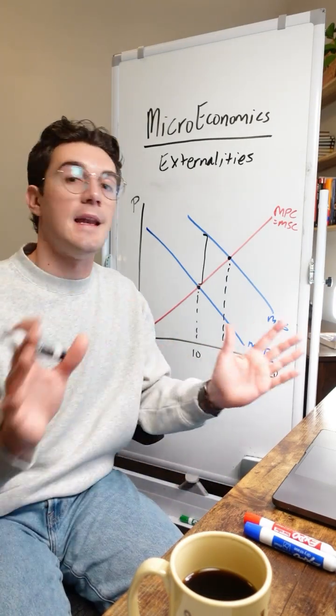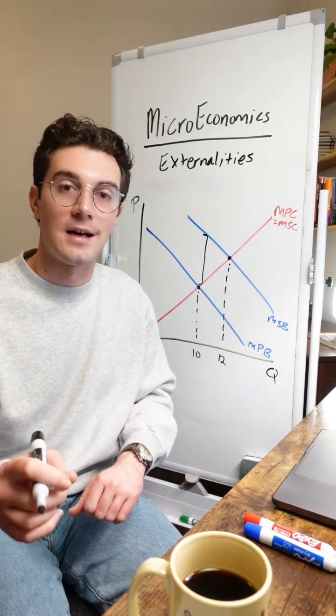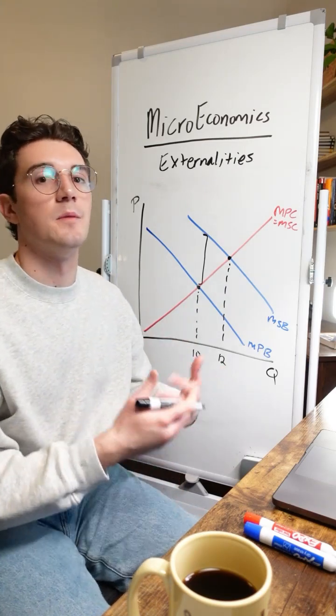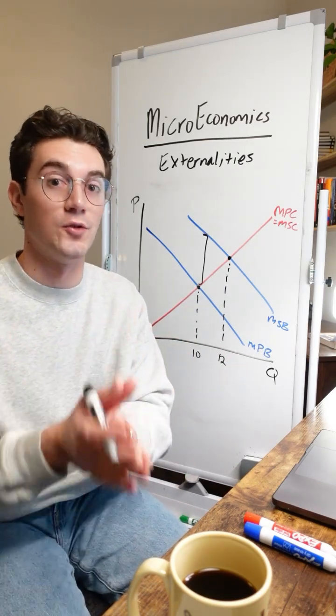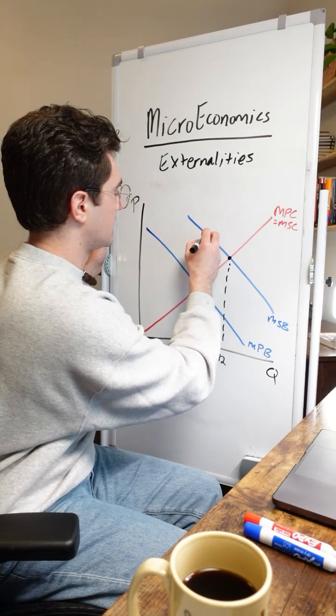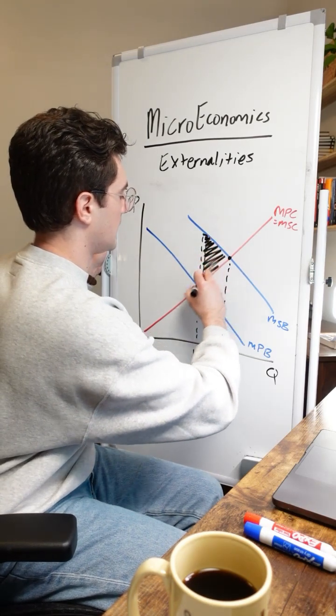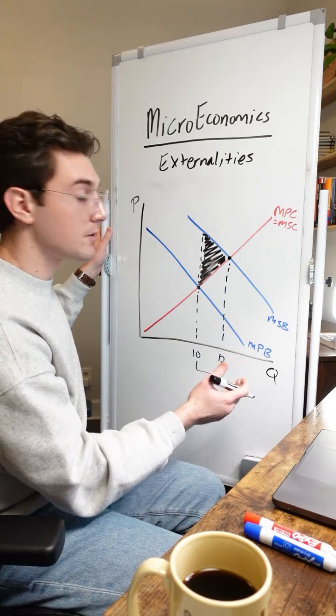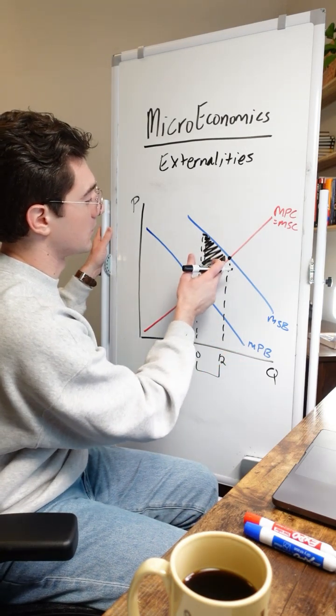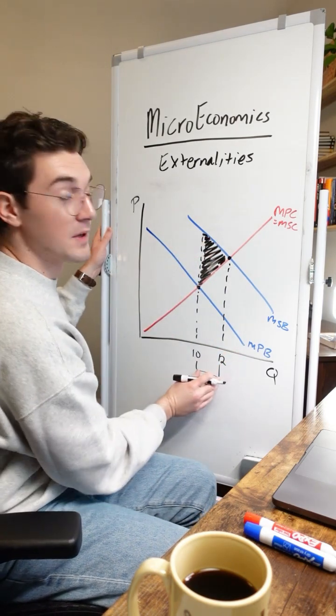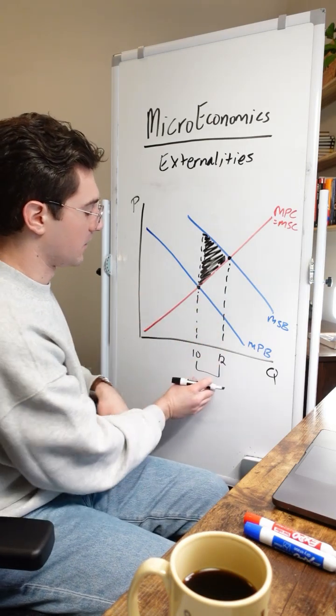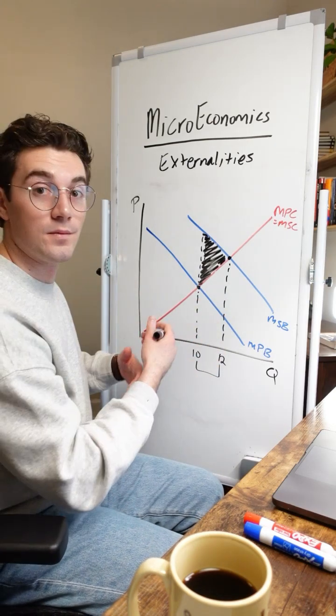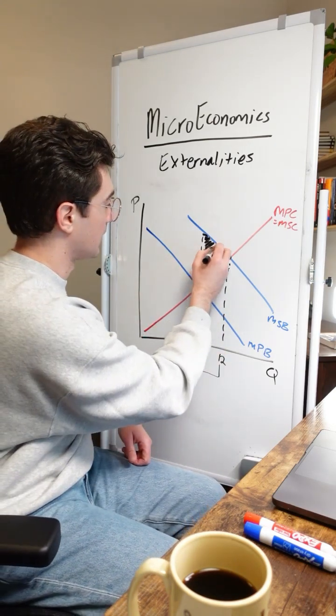Now with that said, any externality causes welfare loss. In this case, benefit that we miss out on to society by not operating at the socially optimal point. This welfare loss is going to equate to this triangle right here because these two units that the private market should output to be socially optimal have a social cost, the red curve, less than the social benefit. So we miss out on profit and welfare by not outputting these two units. The total welfare that we miss out on being the area of this triangle.